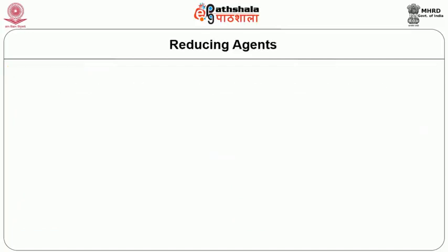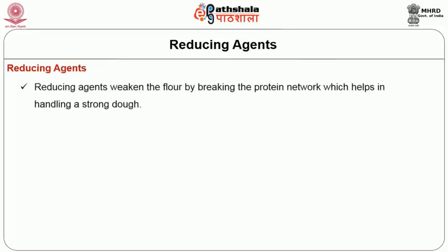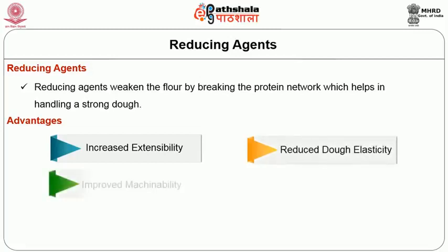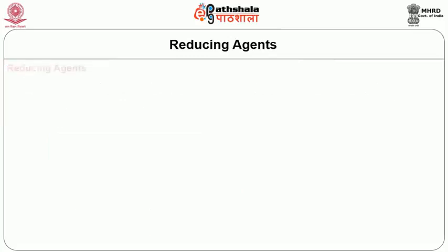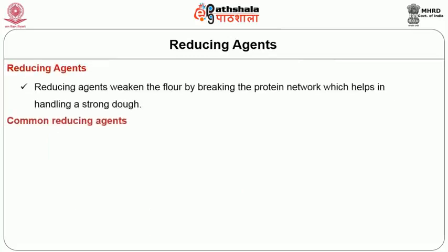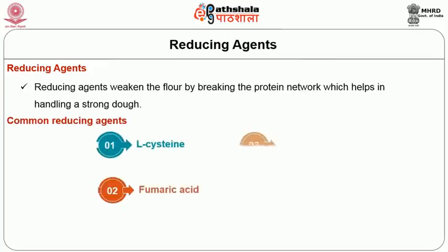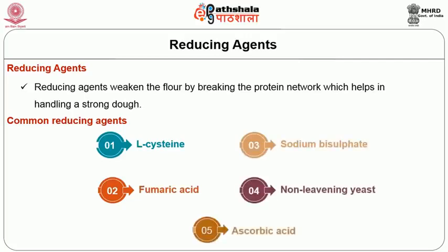Reducing agents: reducing agents weaken the flour by breaking the protein network, which helps in handling a strong dough. The advantages of using reducing agents are increased extensibility, reduced dough elasticity, improved machinability, and shortened mixing and proofing time. The common reducing agents used in the baking industry are L-cysteine, fumaric acid, sodium bisulfate, non-leavening yeast, and ascorbic acid.